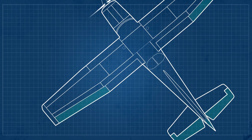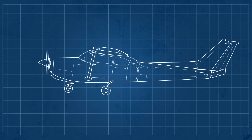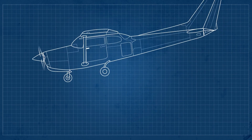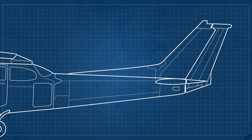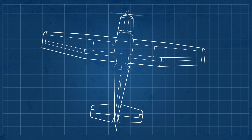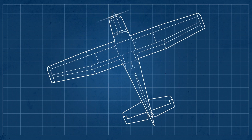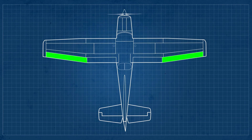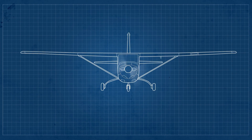The primary control surfaces are responsible for directing the aircraft. These are the elevator, to rise and lower the aircraft, moving the plane in its transverse axis; the rudder, to control the yaw, moving the plane in its vertical or yaw axis; and the ailerons, to control the roll, or tilting the plane from one side to the other, moving the aircraft in its longitudinal axis.